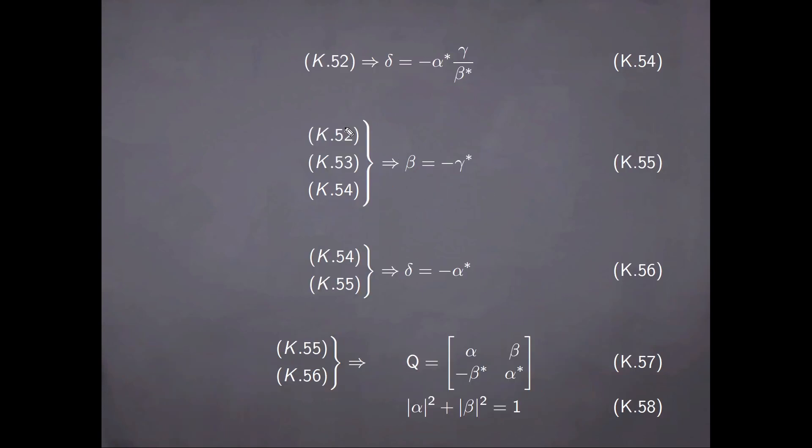Now, from the conditions in the set 52, we can immediately find the relation here between the parameters. And then from 52, 53, and 54, we can simplify things further to this particular condition, and then putting 54 and 55 together, this condition. So now from the two of these, it follows that the matrix Q can be cast in this form with the additional requirement following from the set of conditions 52 of the equality here.